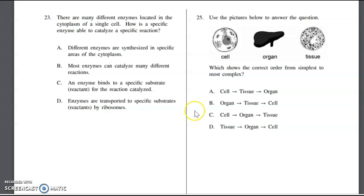Number 25 says use the pictures below to answer the questions. You have a cell, an organ, and a tissue. Which shows the correct order from simplest to most complex? We know the cell is the smallest unit that is a living thing, so the cell is the simplest. A group of cells working together with a similar function form a tissue. Groups of different tissues working together form an organ, like you have epithelial tissue and maybe some muscle tissue. That's the heart.